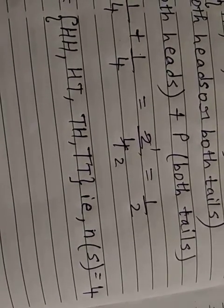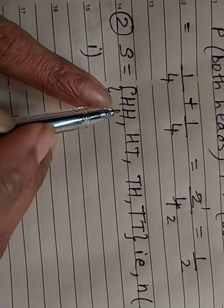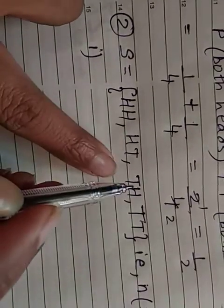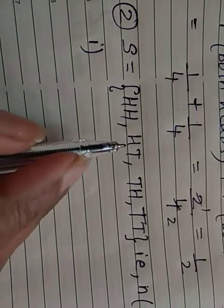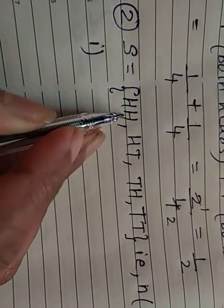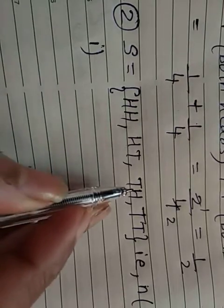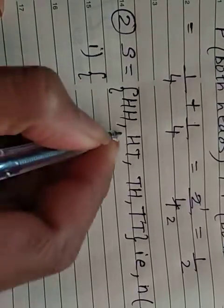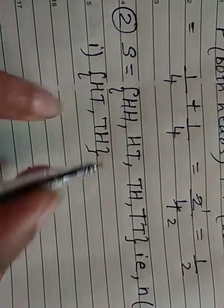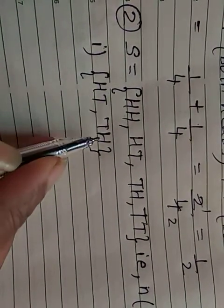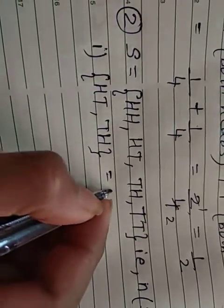The first question asks for exactly one head. Exactly one head means only one head — not two heads, not more than one. Looking at our sample space {HT, TH}, exactly one head appears in two outcomes. So the favorable events count is two.